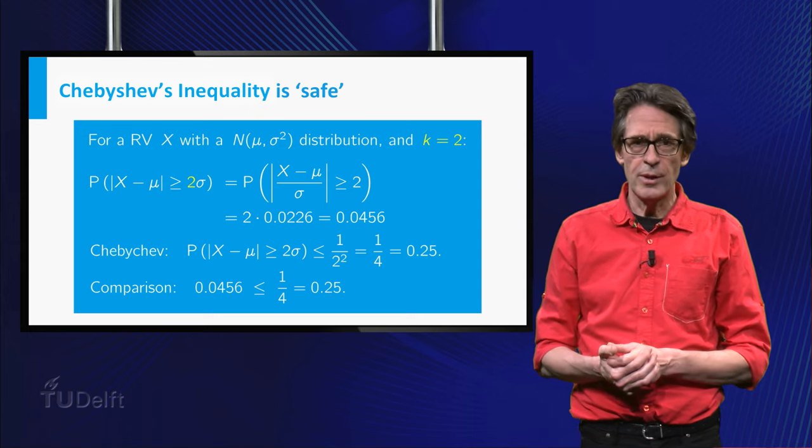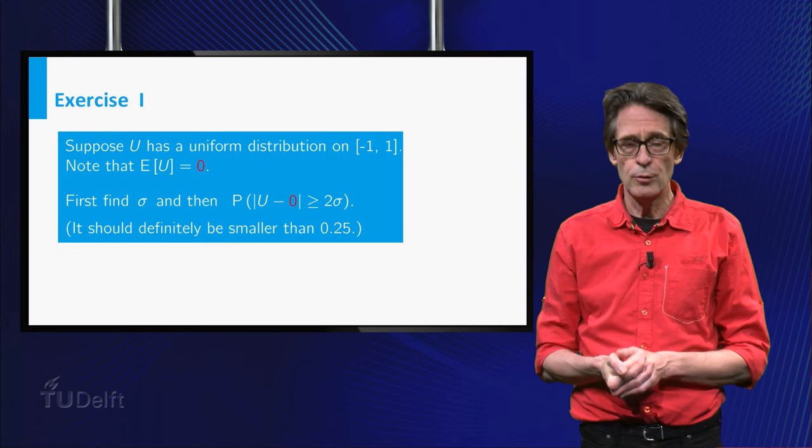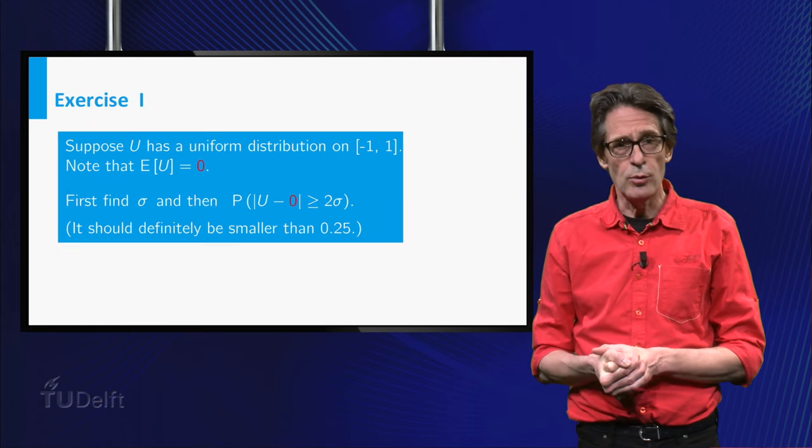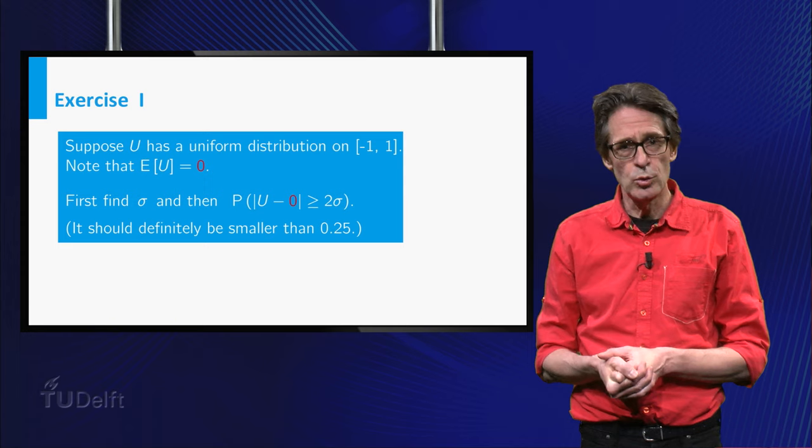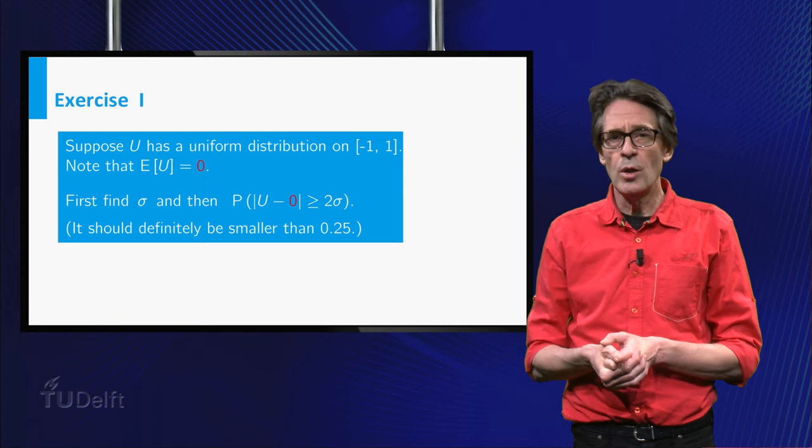To conclude, I recommend you to do the next two exercises. First, see how safe the rule of thumb is for k equals 2 for the uniform distribution on (-1,1).